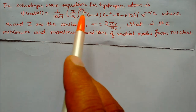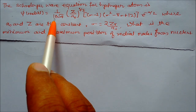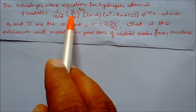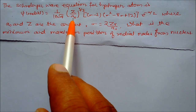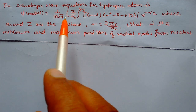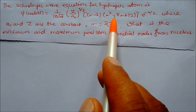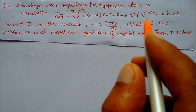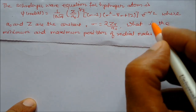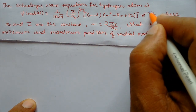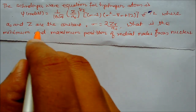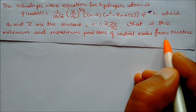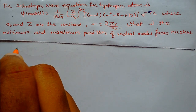Another problem involves the Schrödinger wave function for hydrogen atom with parameter sigma, where σ = 2Zr/a₀, and Z and a₀ are constants. We need to find the minimum and maximum positions of the radial nodes from the nucleus.